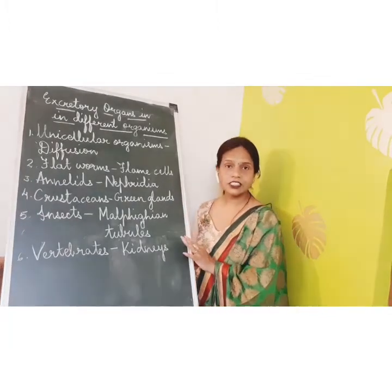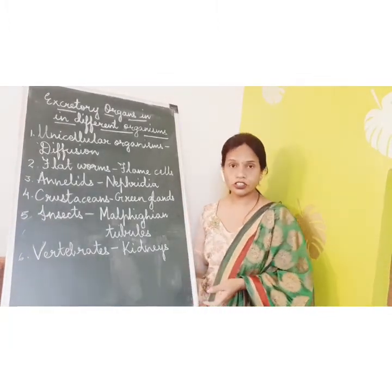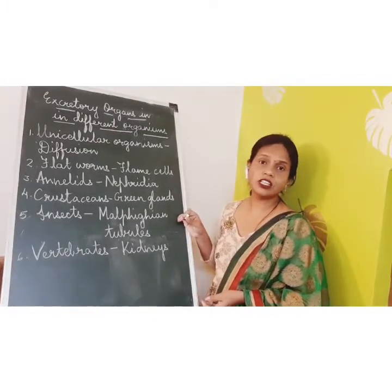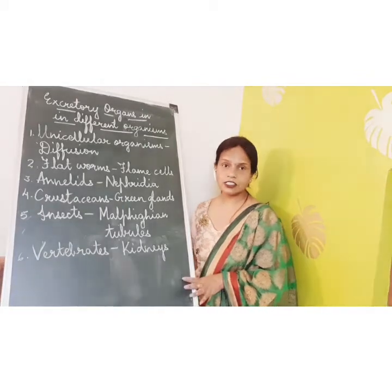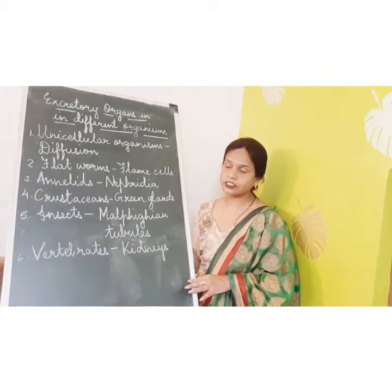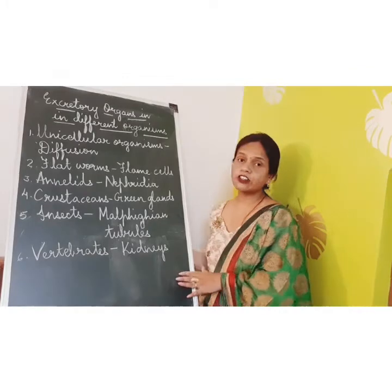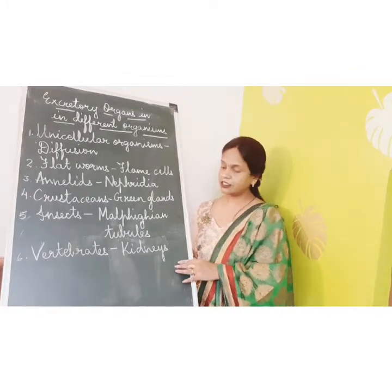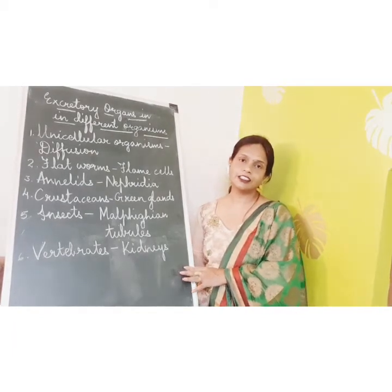In insects such as cockroaches, the excretory organ is Malpighian tubules. In molluscs, they have kidneys as their excretory organ. In vertebrates like us, the excretory organ is also the kidney.